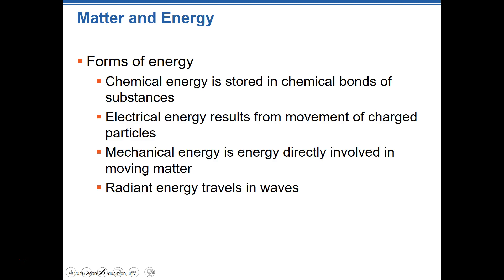Electrical energy comes from the movement of charged particles. We see this especially in the nervous system, and of course in household electricity. This is a tough concept, so we won't get deep into it here — just realize it's the movement of charged particles. When we talk about ions in the body, cations and anions, it has to do with the charging of those particular molecules.